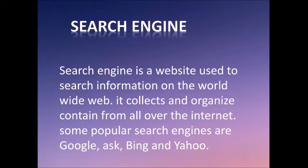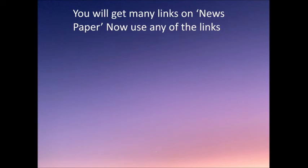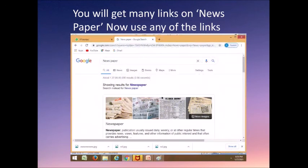Next is search engine. What is a search engine? A search engine is a website used to search for information on the worldwide web. Here is how to use a search engine — follow these steps: First, open the browser. In the second step, type the address in the address bar, such as www.google.com. In step 3, type the text you want to search — for example, type 'newspaper' — then press the Enter key. You will get many links related to newspaper. Use any one of the links.